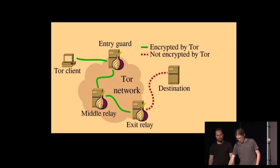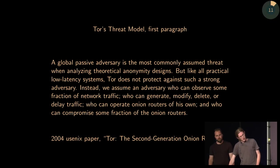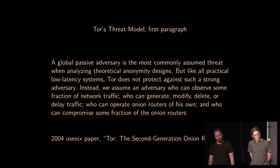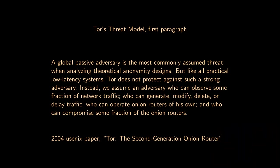Tor's threat model is somewhat well-known from their 2004 Usenix paper. The first paragraph says a global passive adversary is the most commonly assumed threat when analyzing theoretical anonymity designs. At the time this was written, mix nets were being researched heavily. Instead of trying to protect against a global passive adversary, Tor tries to achieve more by having a lower-latency system. We'll talk about the properties of mix nets and why they made these trade-offs.